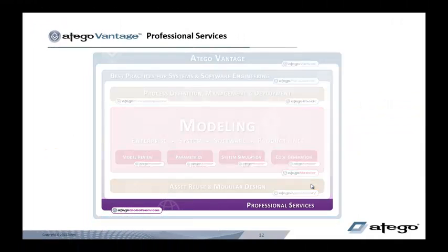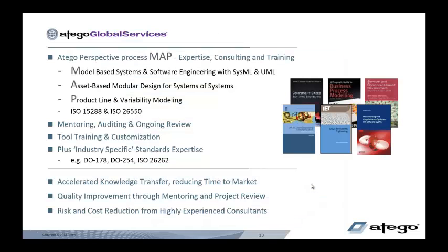And thirdly, we have People — professional services consultants who are experts in all three areas of the Otago Perspective process map. They can help with mentoring, auditing, ongoing reviews, plus training and tool customization. As well as their knowledge on the Otago Perspective, they also have very strong industry-specific knowledge, which can rapidly increase knowledge transfer, reducing your time to bring products to market, improving quality, and reducing risks.